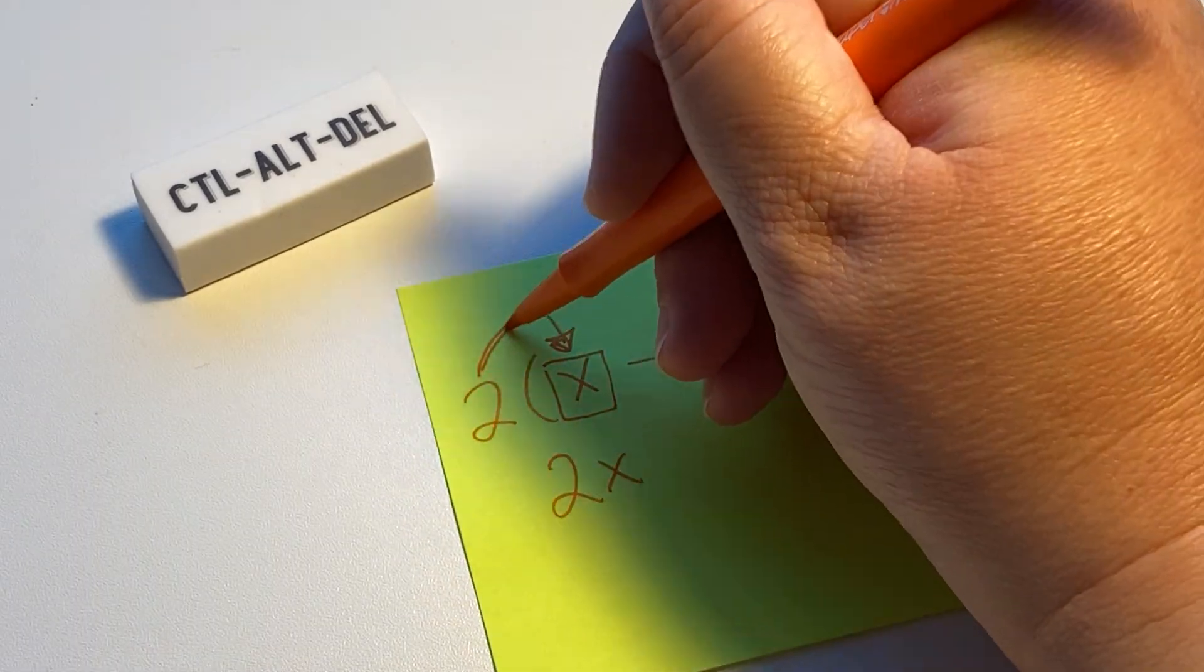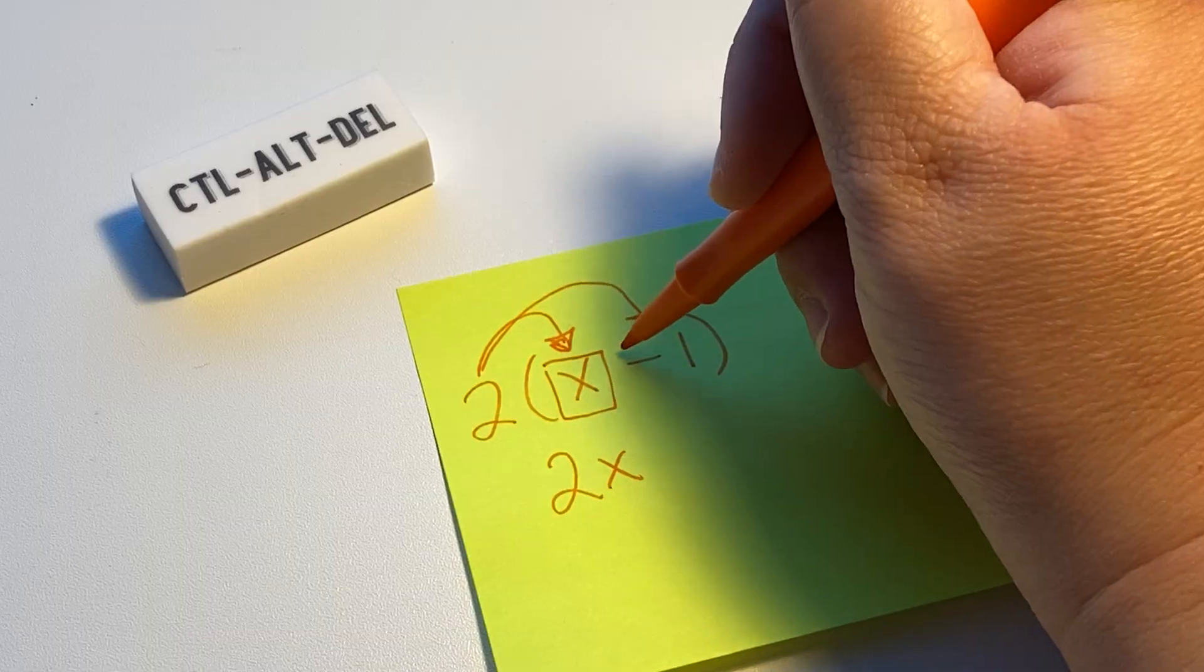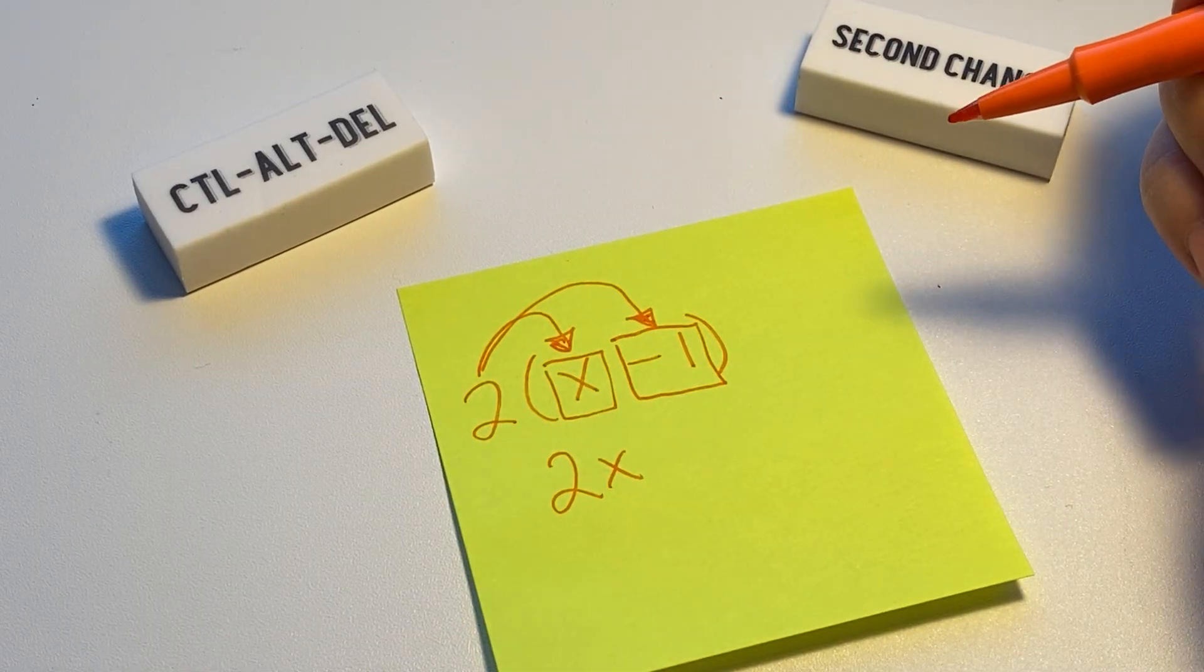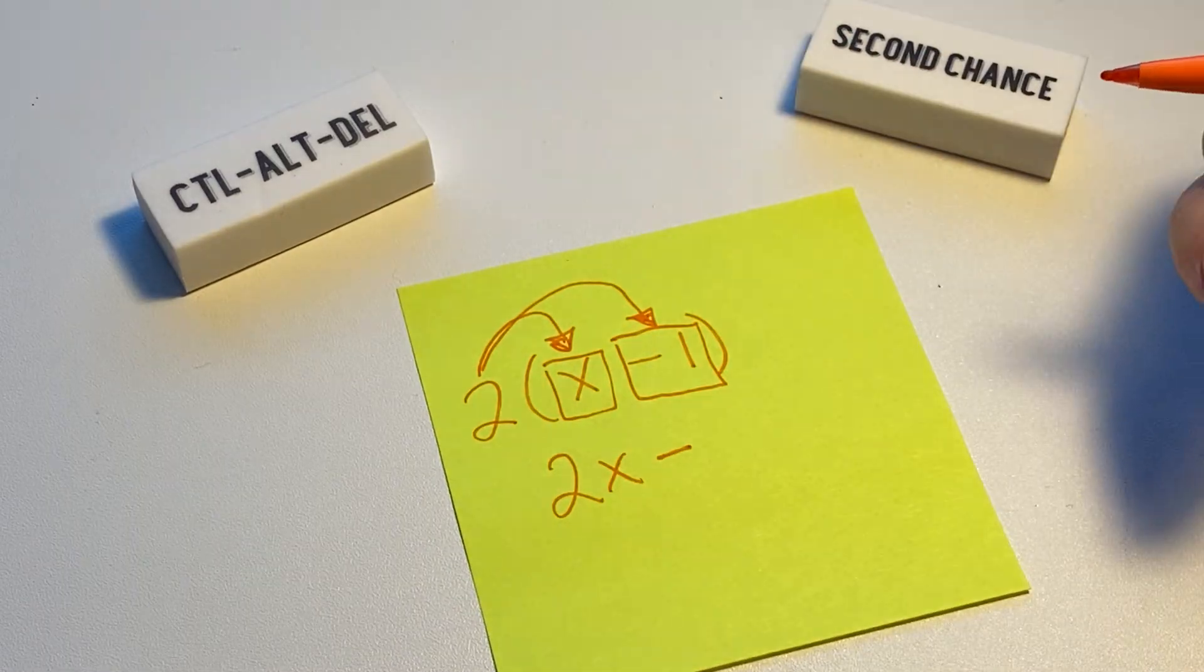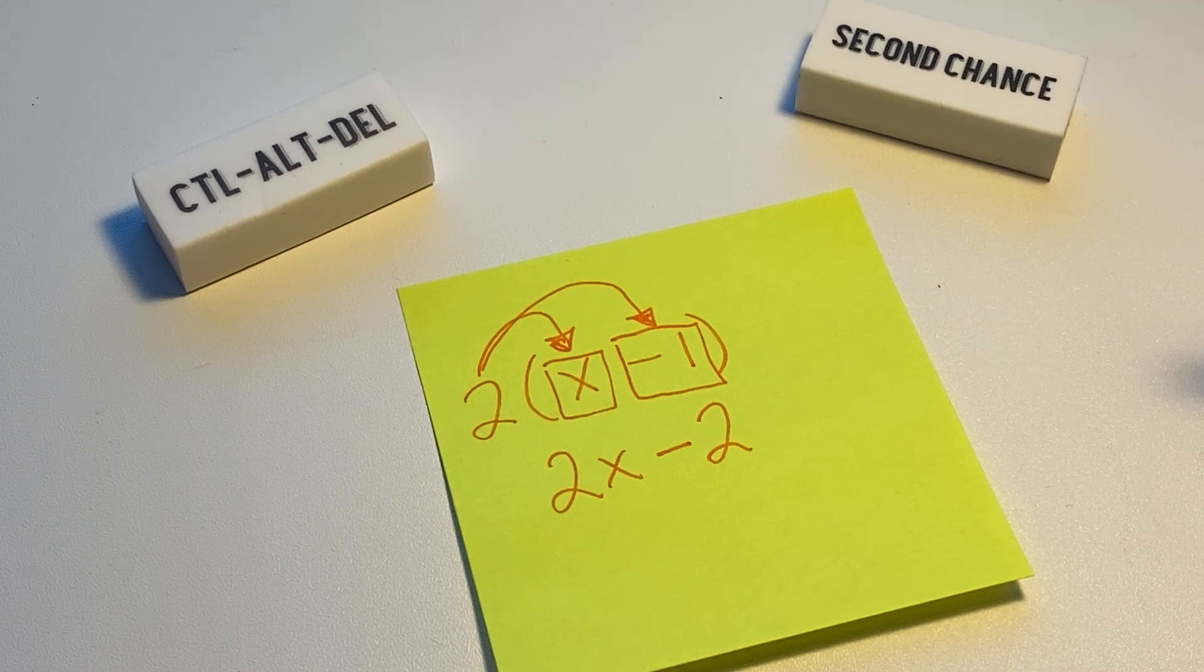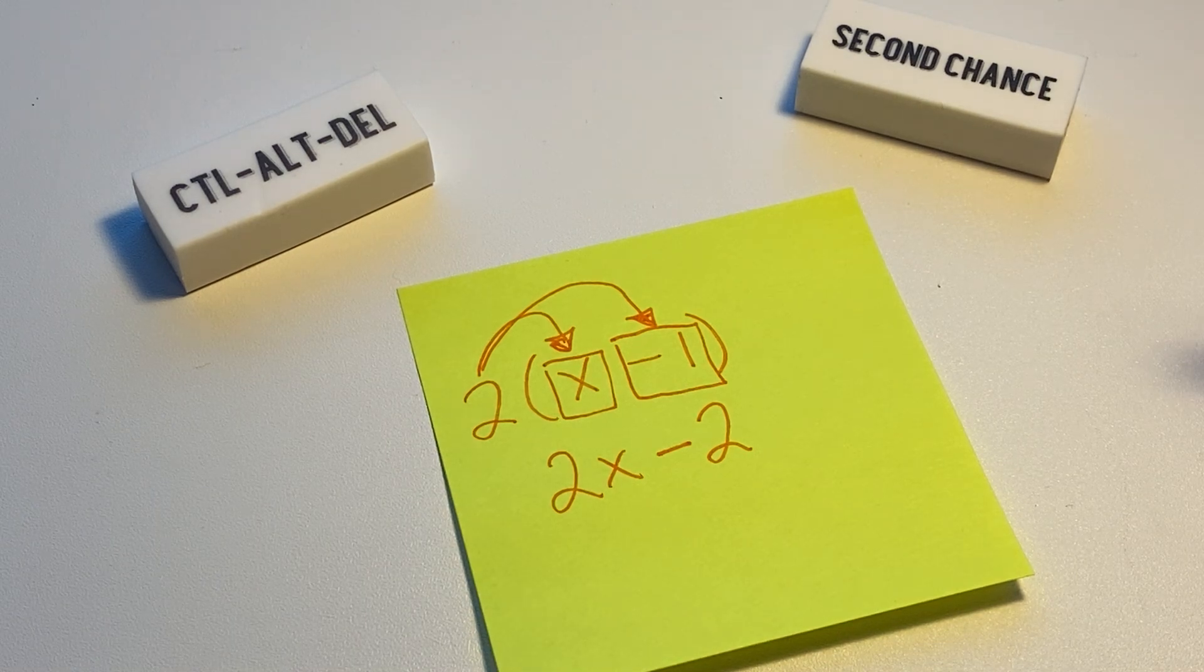So once again we're going to do 2 times x, this is our first term in here so we get 2x. And then over here we're going to times it by 2 times negative one or minus one, so in this case we keep the negative and we have a 2.